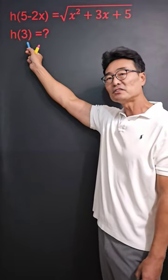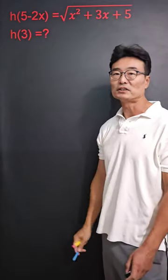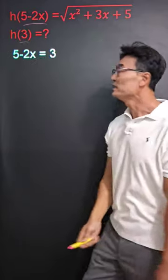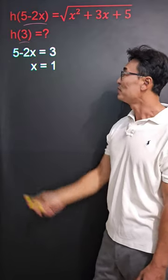To find h of 3, we can't just take the 3 and plug it into the function. Rather, what we have to do is set 5 minus 2x and the 3 equal to each other, solve for x,